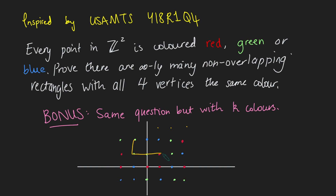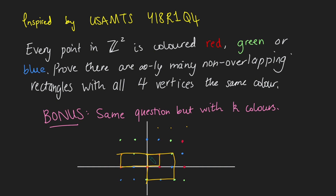I've just drawn up an example of a colouring near the origin. We can see a rectangle where all four vertices are green — that's one rectangle that works. We could also find rectangles with four red vertices or four green vertices, but overlapping ones can only be counted once. As a bonus problem, do the same question with K colours, where K is a large positive integer — we can still find infinitely many non-overlapping rectangles.